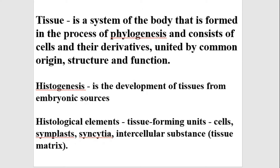Intercellular substance is a tissue-forming unit located between main structures such as cells, symplasts, and syncytium. It is a compound structure generally composed of two main parts: a fluid part called ground substance and a non-fluid part consisting of fiber structures. Each type of tissue has its own properties and morphological characteristics.